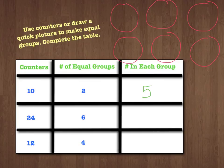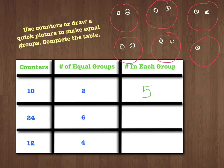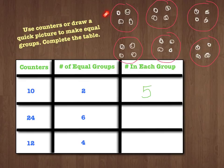Now I need to put the counters in. How many counters am I going to count out? 24. I count out 1 through 24, placing them into the 6 groups. How many are in each group? Let's count: 1, 2, 3, 4. Remember, you have to count twice to make sure all of your groups have the same number. If they're not equal groups, it's not division — just like if it's not equal groups, it's not multiplication. So we have 4 in each group. 24 counters into 6 equal groups gives us 4 in each group.